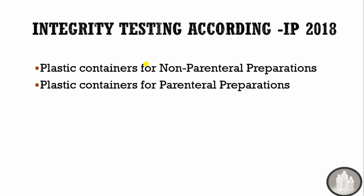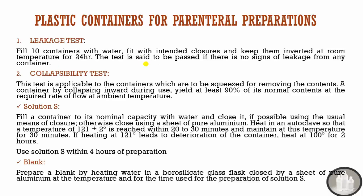According to IP 2018, tests for plastic are divided into plastic containers for non-parenteral preparation and plastic containers for parenteral preparation. For parenteral preparation containers, the first test is the leak test: 10 containers are filled with water, fitted with the intended closure, and kept inverted at room temperature for 24 hours. The test passes if there is no sign of leakage. The collapsibility test applies only to containers that require squeezing; the container should yield at least 90% of its nominal volume at the required flow rate at ambient temperature.